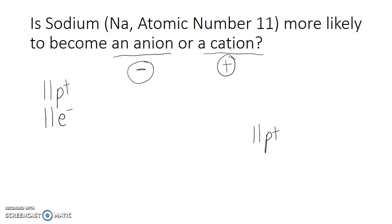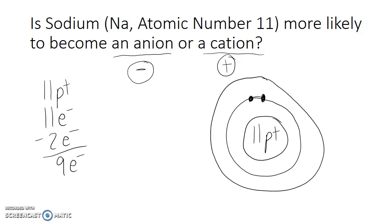All 11 protons show up in the nucleus of the atom, and now we start filling in the electron shells. The first electron shell can hold exactly two electrons, leaving us with nine electrons. The second electron shell can hold exactly eight electrons...